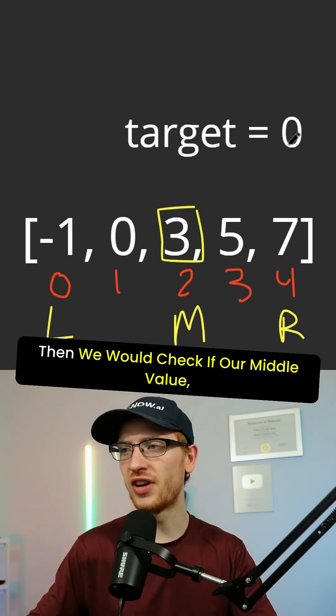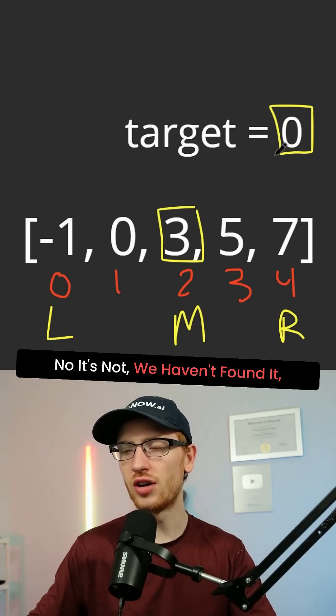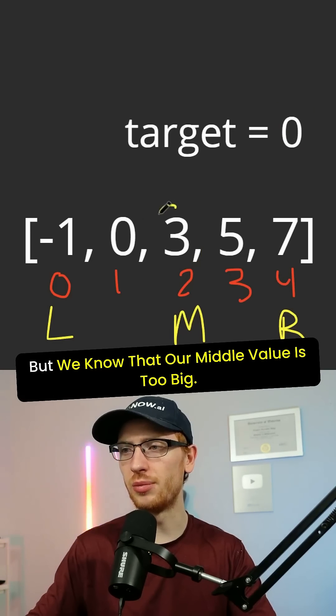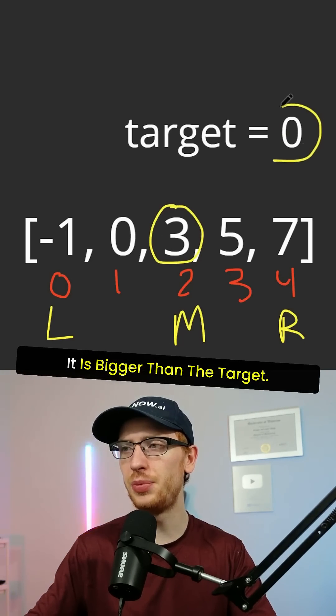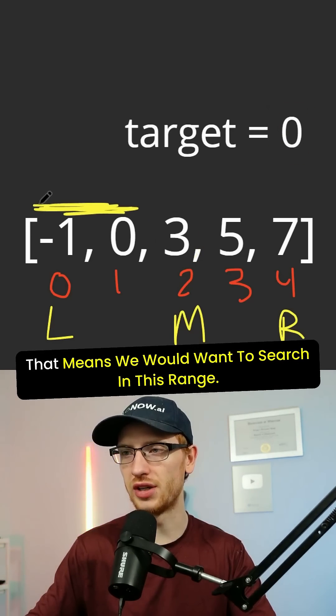Then we would check if our middle value is equal to the target. No, it's not. We haven't found it. But we know that our middle value is too big. It is bigger than the target. That means we would want to search in this range.